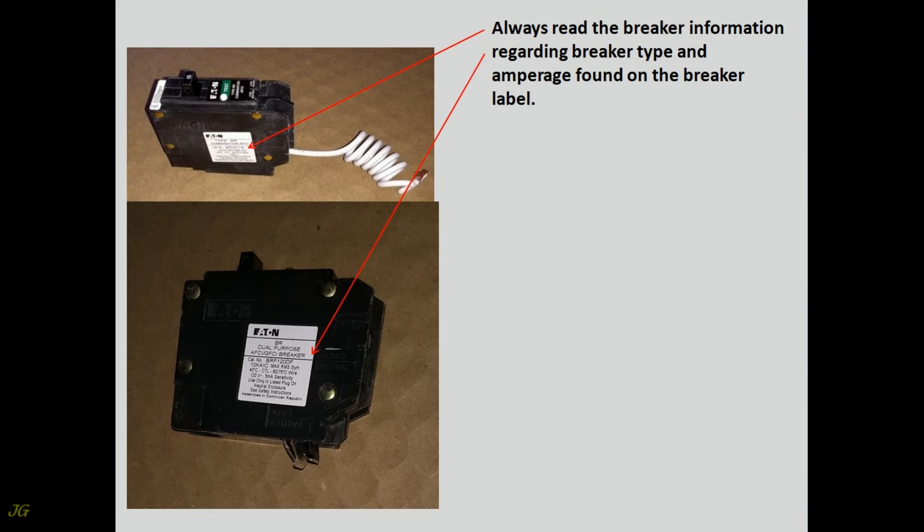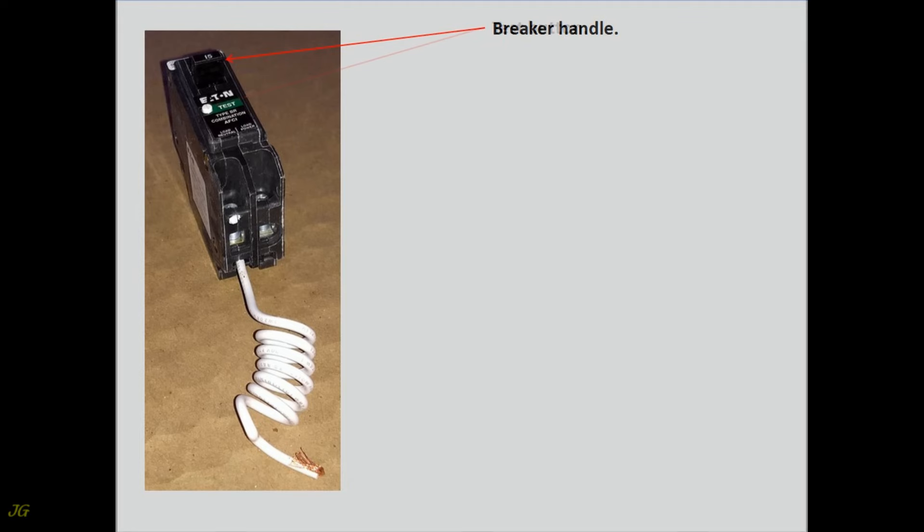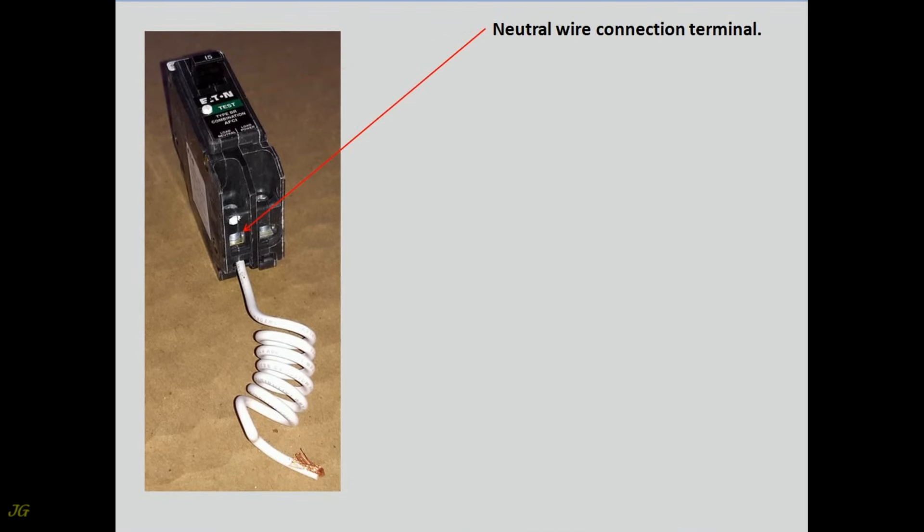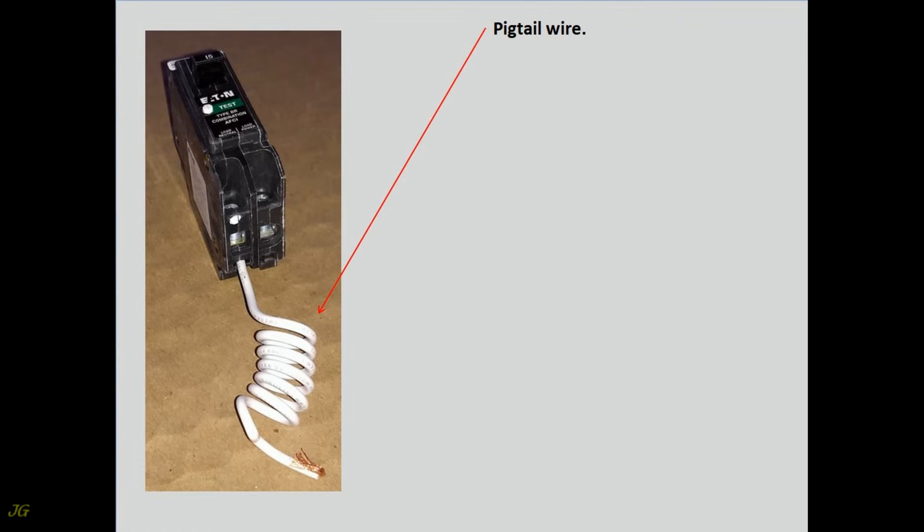Always read the breaker information regarding breaker type and amperage found on the breaker label. GFCI, AFCI or AFCI GFCI circuit breaker with neutral wire pigtail. Breaker handle. Test button. Neutral wire connection terminal. Hot wire connection terminal. Pigtail wire.